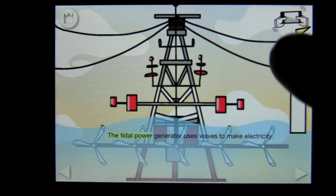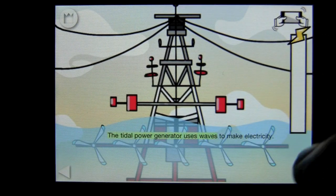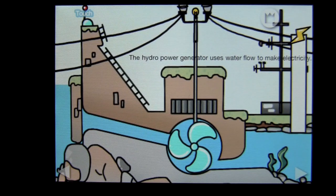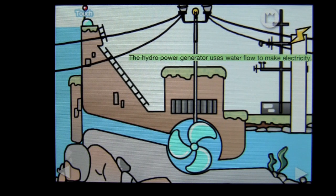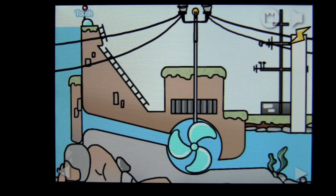This activity uses the action of the accelerometer and then we'll stick with this one. The hydropower generator uses water flow to make electricity. Now the instructions are read to you as well as provided audible through the narrator. You can turn that off in the settings and I'll show you that in a moment.